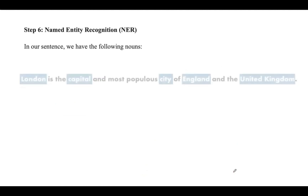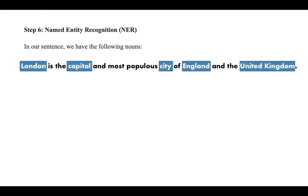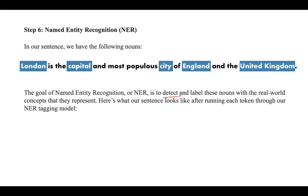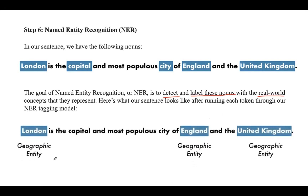Step six is named entity recognition. In our sentence we have some nouns, and some of these nouns represent real things in the world — for example, 'London', 'England', 'United Kingdom' represent physical places on a map. With that information we could automatically extract a list of real-world places mentioned in a document, which can be done with the help of NLP. The main goal of NLP here is to detect and label these nouns with real-world concepts, and here you can see how you can represent them — for example, London is a geographic entity.